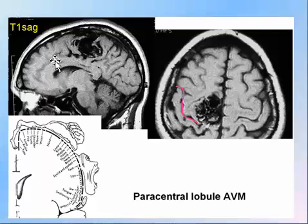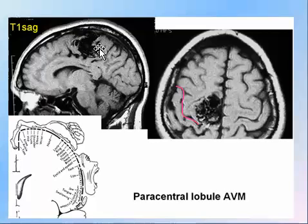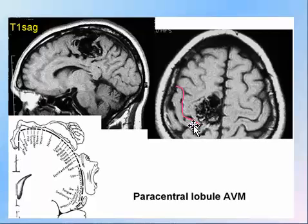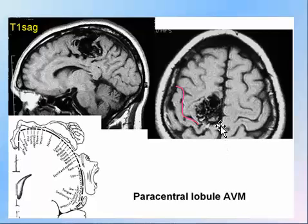In this area is the cingulate gyrus, the cingulate sulcus, and the central sulcus. An AVM is seen just anterior to the central sulcus near the midline, extending along the medial aspect of the brain hemispheres.